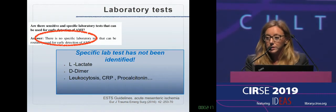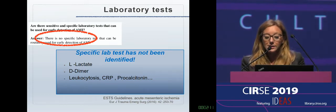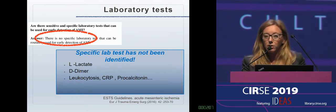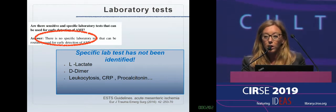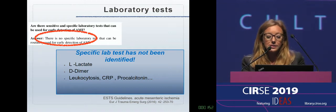Unfortunately, despite many studies, an early sensitive and specific lab test has not been identified so far. We can use L-lactate, which is a biomarker of hypoperfusion, but it is not so sensitive and specific for mesenteric ischemia, because its level can increase in other intestinal and non-intestinal diseases.